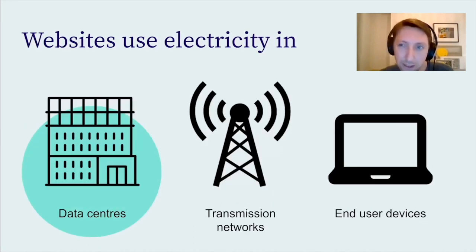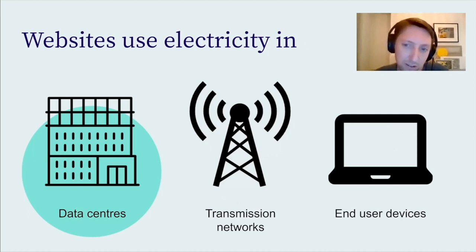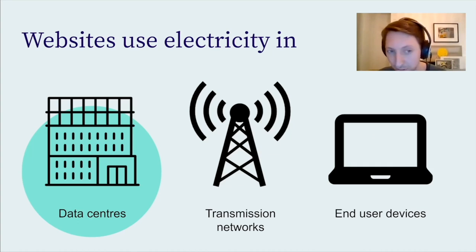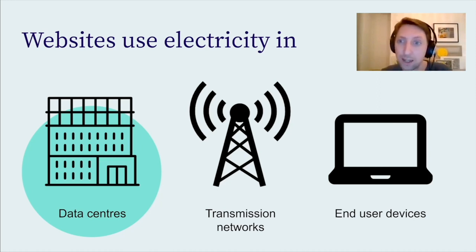These emissions are all from electricity, essentially. Some of it is from generators, but ultimately it's all electricity — it's not like the aviation sector where you have to burn fuel. It's about how you get the electricity from data centers, transmission networks, and end user devices. Digital sustainability is about looking at how we reduce this energy use, how we reduce the carbon emissions from the electricity itself, as well as the bigger picture: what influence does digital have on society's shift to more sustainable ways of working and living?